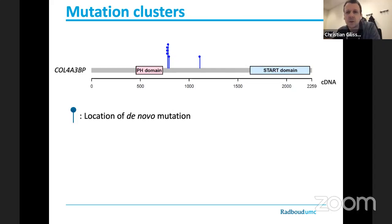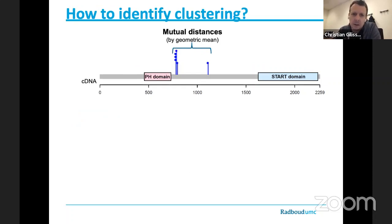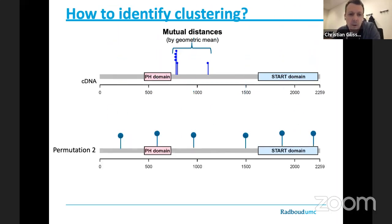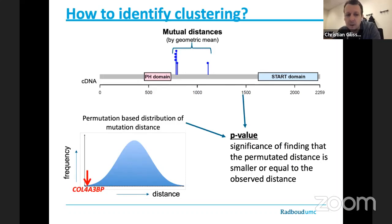One thing we noticed while doing this analysis is that sometimes we identify mutation clusters. For one of the known genes, you can see that five out of six mutations cluster very closely together on the cDNA. We wondered: can we use this fact to identify novel genes not by the number of mutations, but by looking at their spatial distribution across the gene? We define a clustering metric as the geometric mean of the distances on the cDNA of all mutations, then perform permutations — randomly distributing the same number of mutations across the gene — and ask whether the real mutation distribution is very different from what we expect.